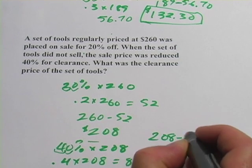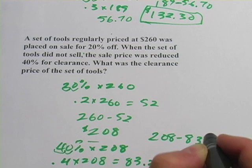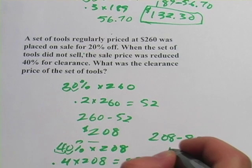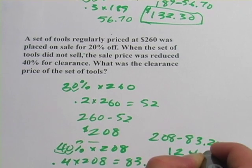So 208 minus 83.20, and that should be $124.80.